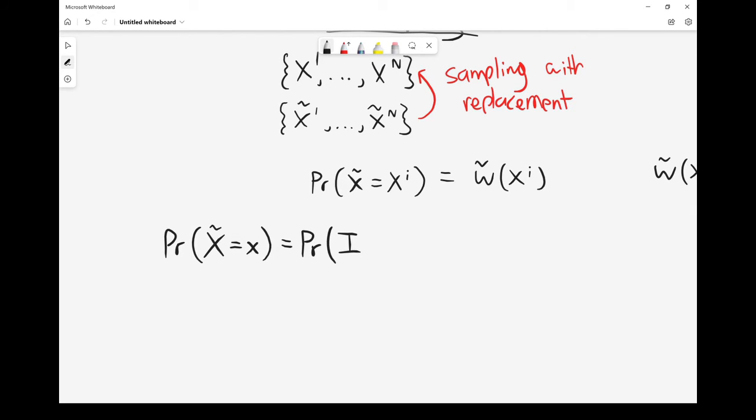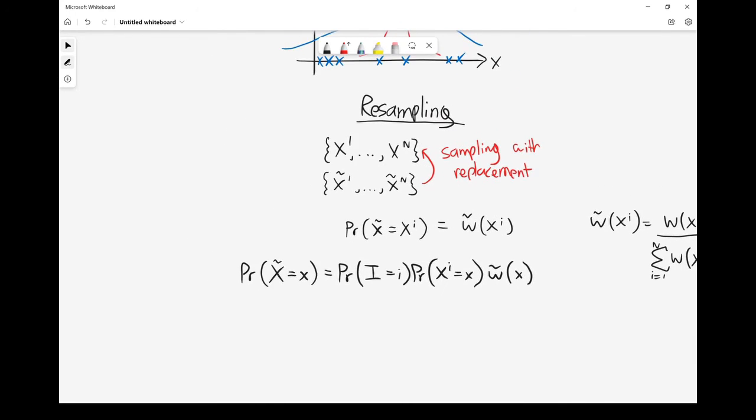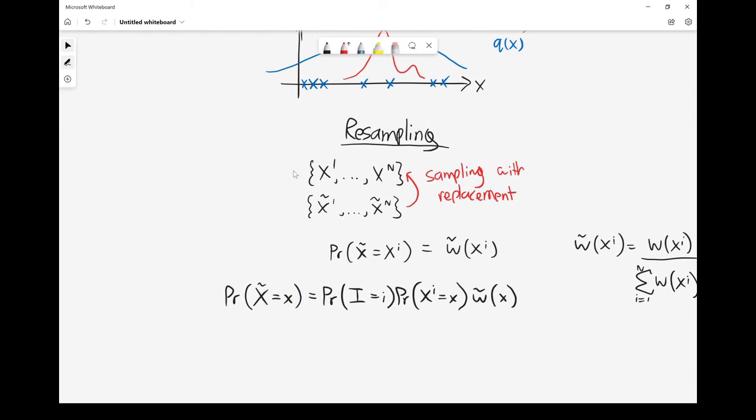The next thing that has to happen is that our ith current sample is indeed equal to lowercase x. And then finally, we also have to accept that into our new set of samples. And so that is our normalized importance weight evaluated at lowercase x. So just worth reminding ourselves that this only works if lowercase x is one of these samples. So we're really restricted to the blue crosses. If lowercase x is something else that isn't one of the blue crosses, then this probability will be zero.